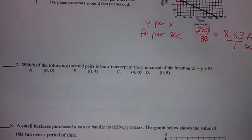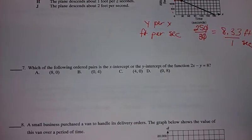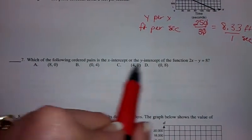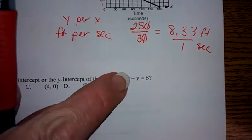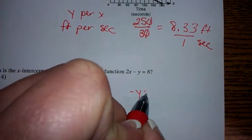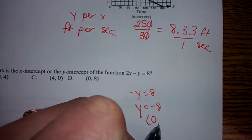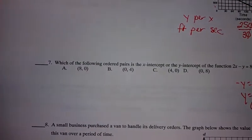The next one, it says which of the following ordered pairs is the x-intercept or the y-intercept of the function. So either one of these, it could be the x or the y. So let's figure this out. Let's look at the y-intercept. For the y-intercept, I'm going to cover up the x. And it says negative y equals 8. Y would end up being negative 8. So I have 0, negative 8. That's the y-intercept. Well, that's nowhere in there.